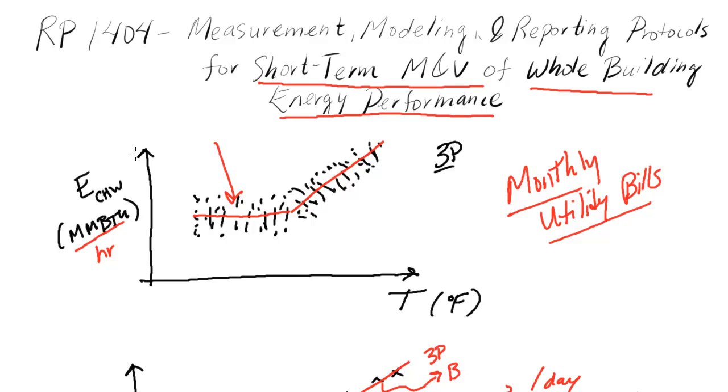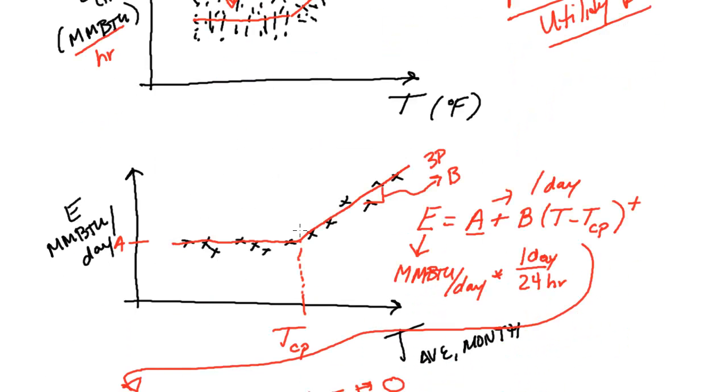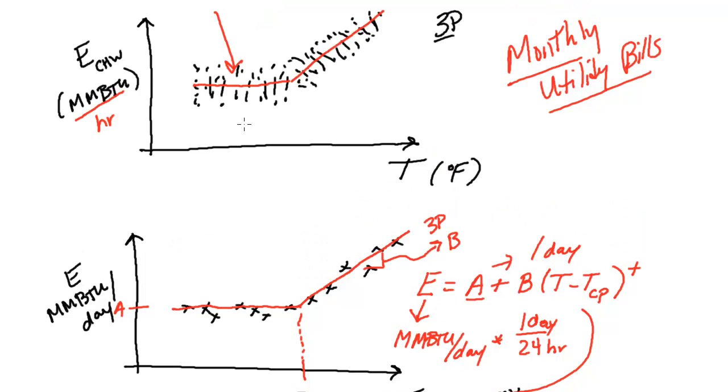In the last video, we were covering some of the original basics for RP1404, and we were talking about how we were going back and forth between this daily timescale with monthly data and moving to the sub-daily scale, for instance hourly. Something I'd like to point out here is that if we had all this hourly data, and say this is 8760, you really don't need this method.